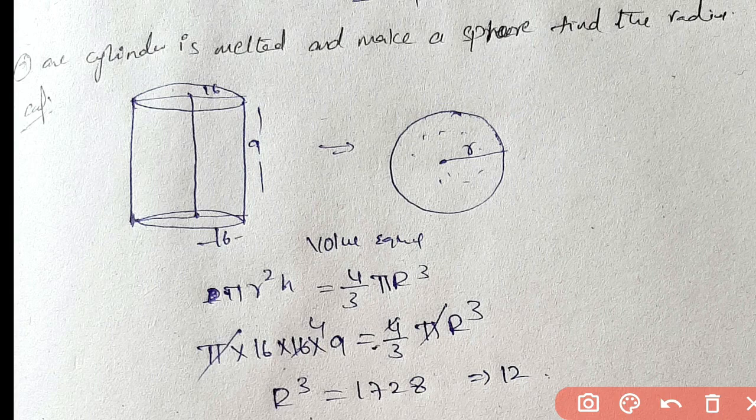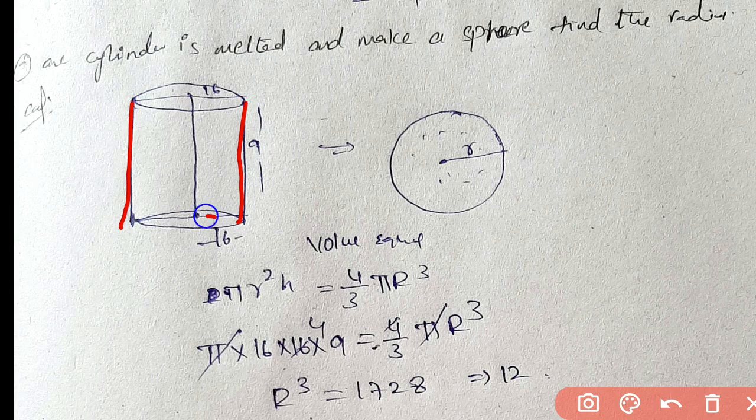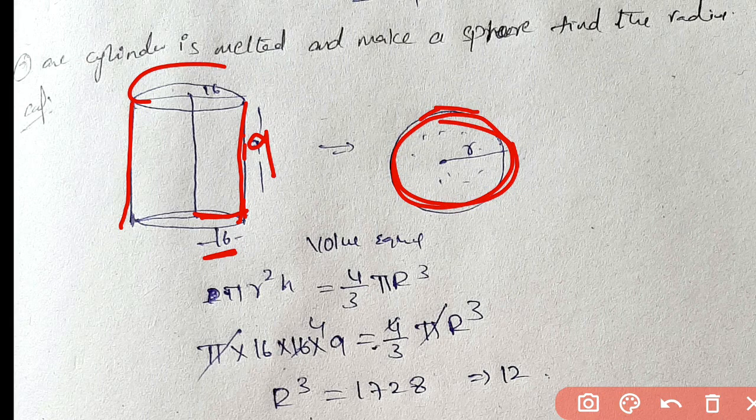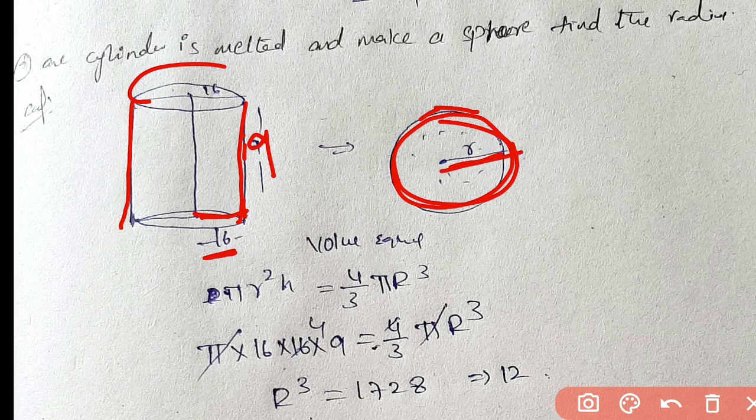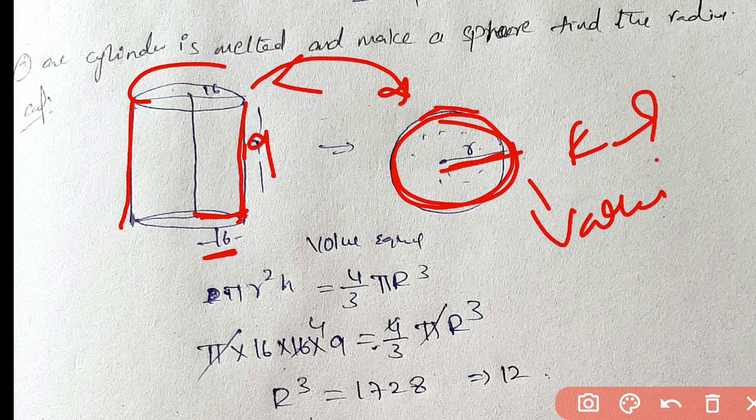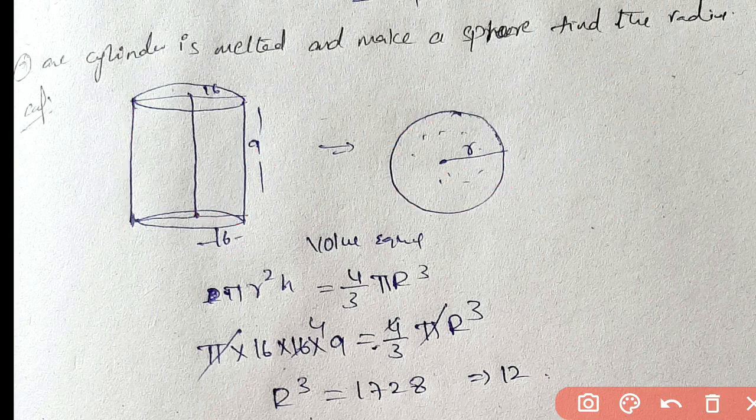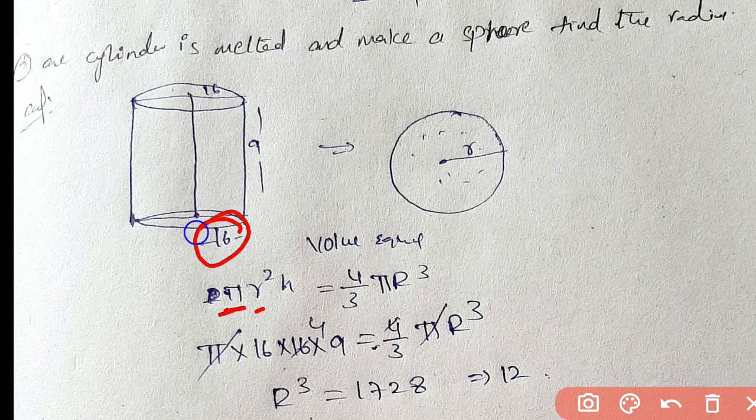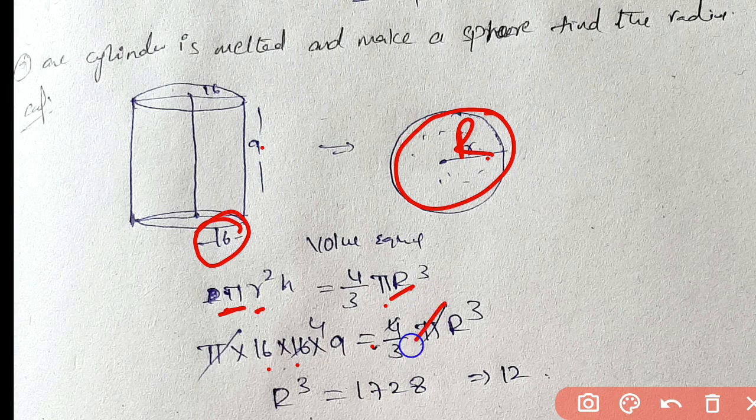There is a cylinder with radius 16 and height 9. The cylinder is melted and made into a sphere. Find the radius of the sphere. Compare the volumes. Volume of cylinder equals volume of sphere. Using formula pi r squared h equals 4 by 3 pi r cubed. pi into 16 into 16 into 9 equals 4 by 3 pi r cubed. Solving, r cubed equals 1728, so r equals 12.